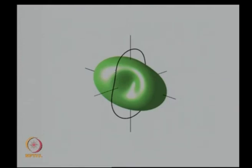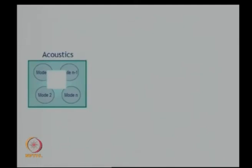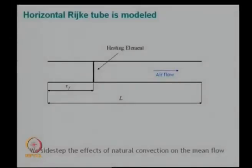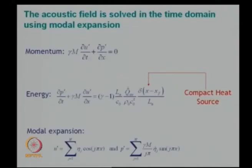This has to do with the topology or geometry of the phase space. Now we are looking at the Rijke tube model, which we already derived in class — a simple model. It needs a representation of the acoustic field and some expression for the heat release rate. We solved the momentum and energy equations and did a modal expansion. We are attempting a time domain solution because we are interested in seeing the transients.